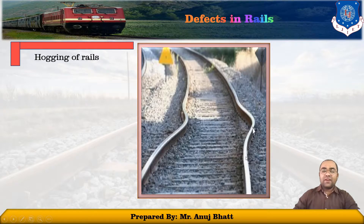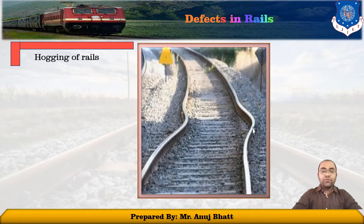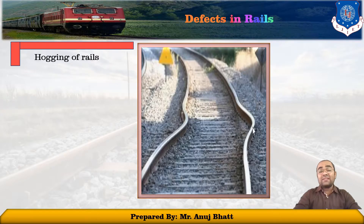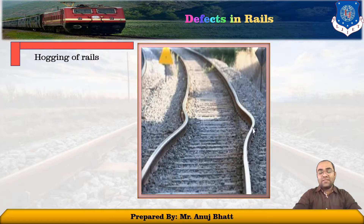Here you can see this defect, known as the hogging of rails. Rail ends get hogged due to poor maintenance of the rail joints, yielding formation, loose and faulty fastenings, and other such reasons. At rail joints, one end of the rail connects to the starting point of the next rail, and the joint may sometimes get loosened due to frequent lowering, making these critical places where hogging defect is observed.